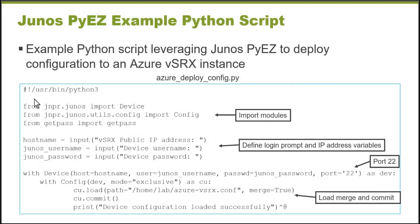This is the example Python script that we will run. The first part imports the modules to perform the required functions. This is how the Junos PyEZ library is referenced: jnpr.junos. From this Python library, I want to import a device object class, and from the configuration module, I'd like to import the configuration object class. When these VSRx instances spin up in Microsoft Azure, I have them configured to receive a public IP address, and that's how we're going to connect to it.